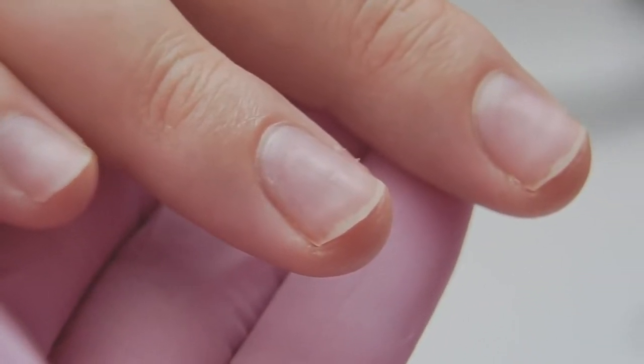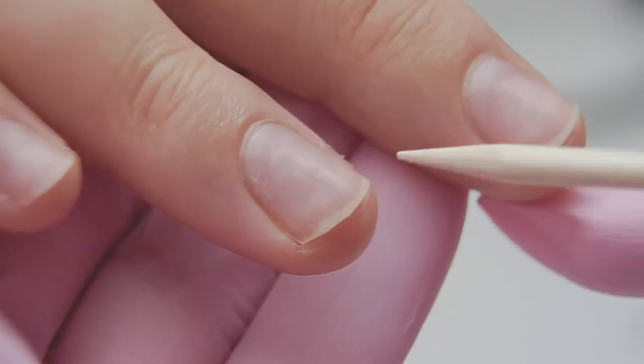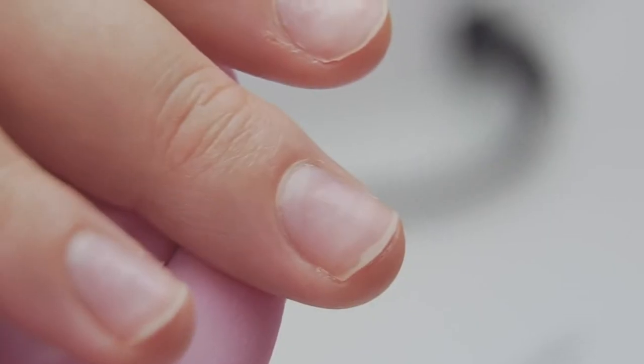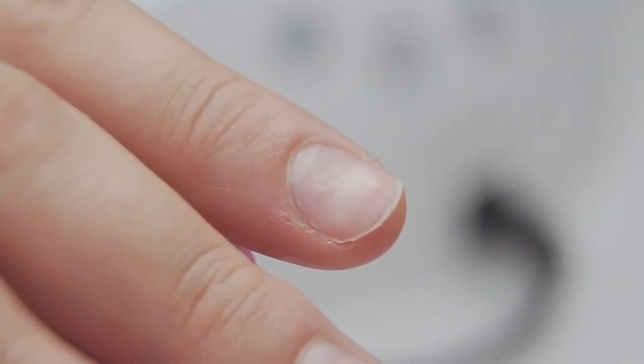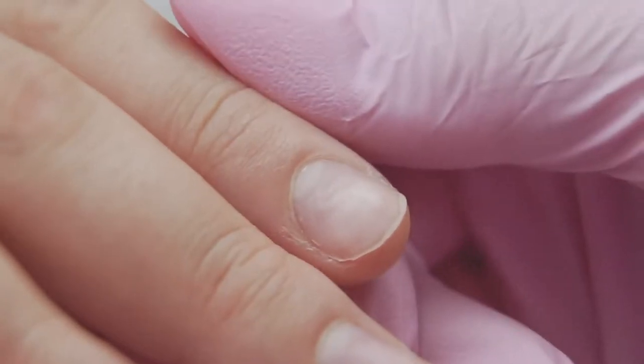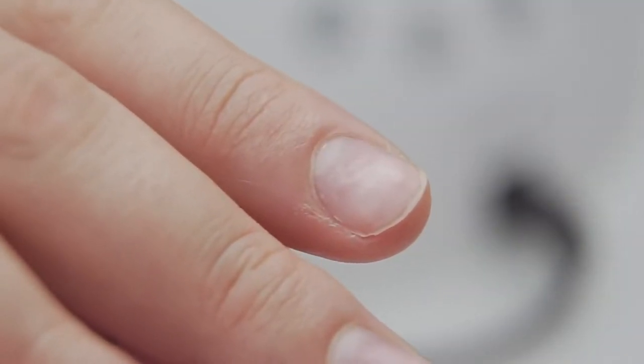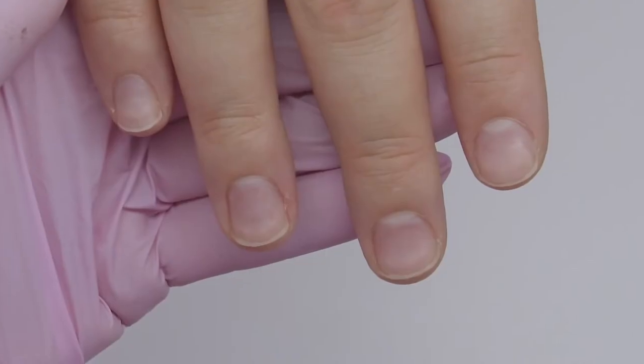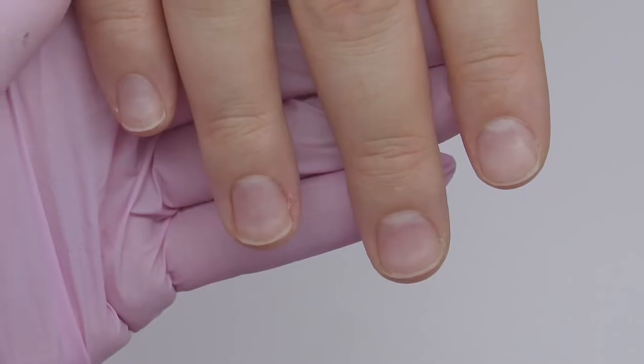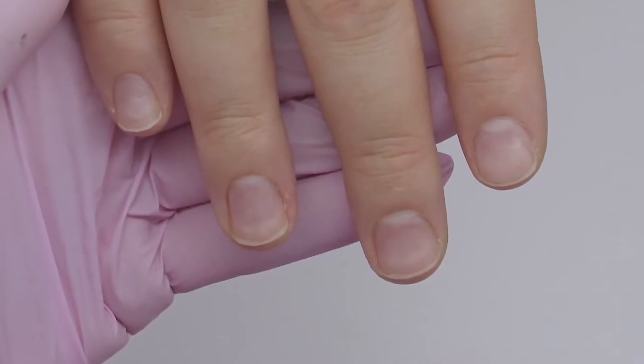As usual, I check the condition of the nails and the cuticle before I start. I can see a lot of cuts from the previous manicure. They are like lines on the tree, indicating how many times my model got her nails done. So today I need to work carefully to avoid any extra cuts.